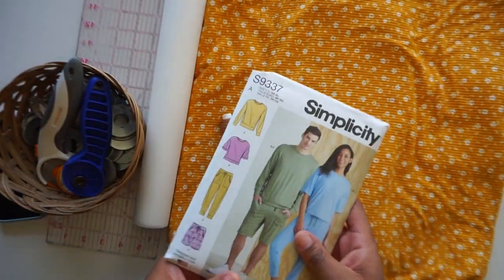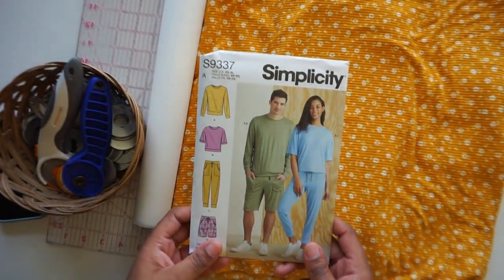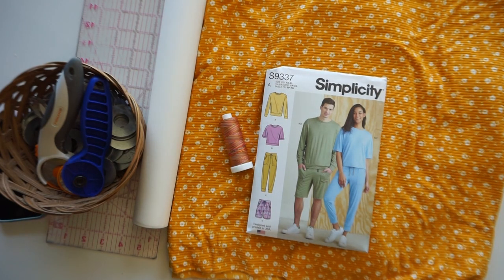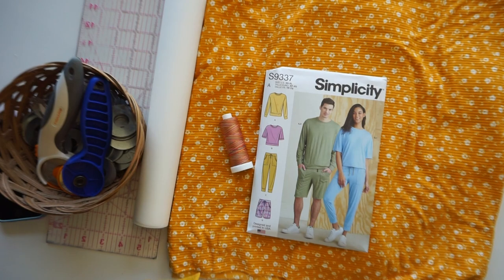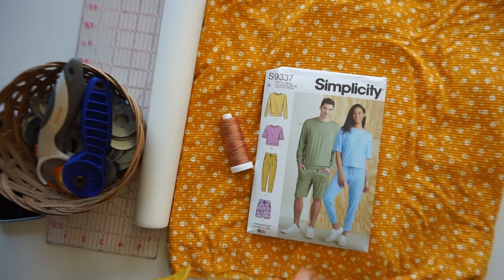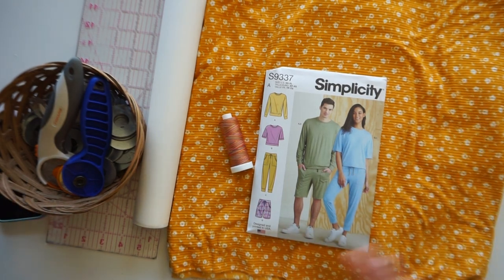Alright guys, so today we are going to be hacking this pattern here, this is the Simplicity 9337 and we're going to take this top and we're going to turn it into a flared sleeve crop top. It's going to be glorious.